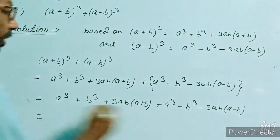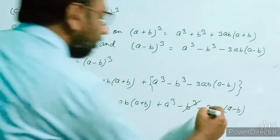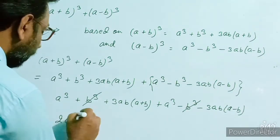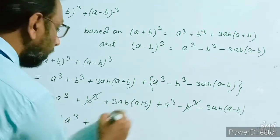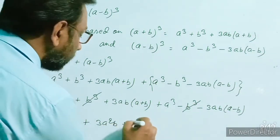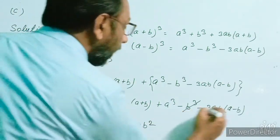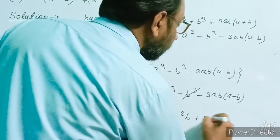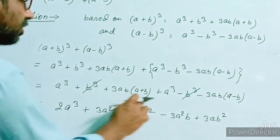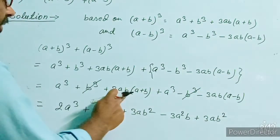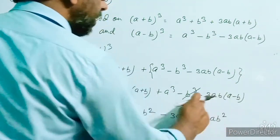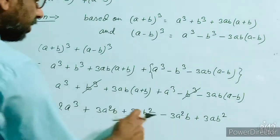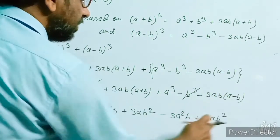Now, -b³ and +b³ cancel. We have -3ab in the second group. Writing out: a³ + a³ = 2a³, then +3ab·a + 3ab·b = 3a²b + 3ab², and from the second group -3ab·a + 3ab·b = -3a²b + 3ab². So we get 2a³, and the 3a²b terms cancel, leaving 3ab² + 3ab² = 6ab².